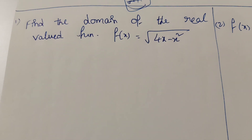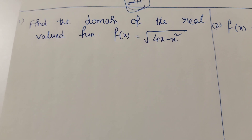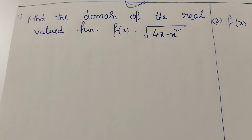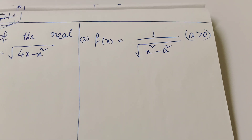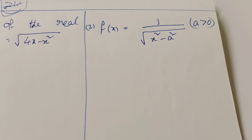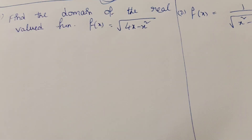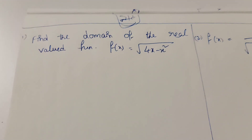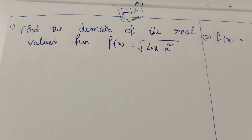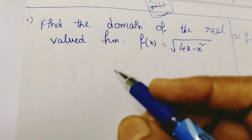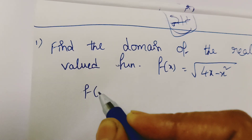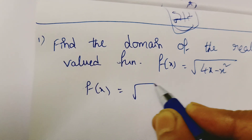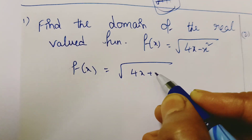What is the first question? Find the domain of the real-valued function f(x) equal to root of 4x minus x squared. Today we have 5 questions. The given function is f(x) equal to root of 4x minus x squared.